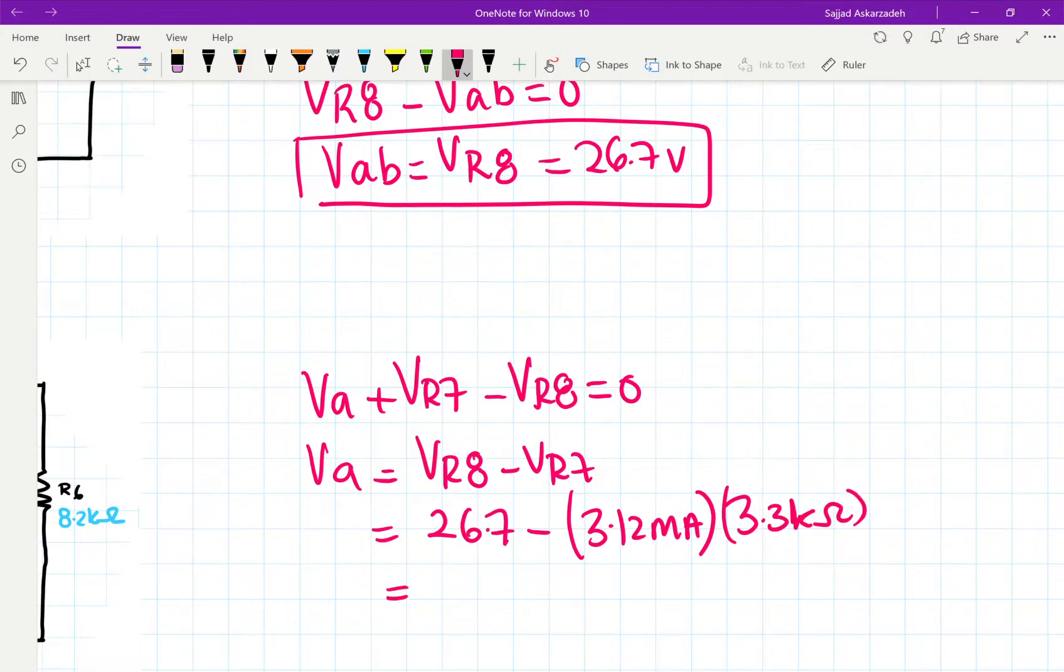And this gives us, let's just calculate it. 26.7 minus 3.12 multiplied by 3.3 gives us 16.4 volts for VA.